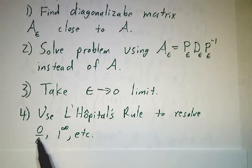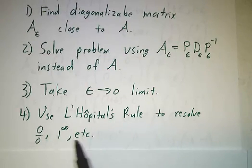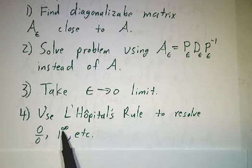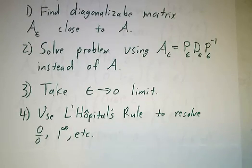So typically you wind up with something that looks like zero over zero, or maybe one to the infinity, or some other indeterminate form, and you resolve that using L'Hopital's rule.